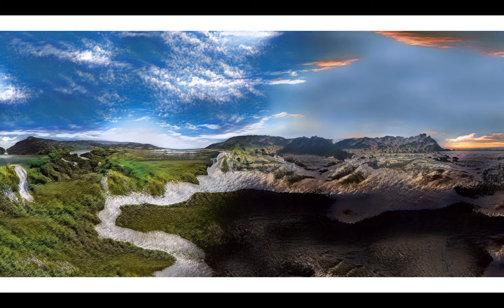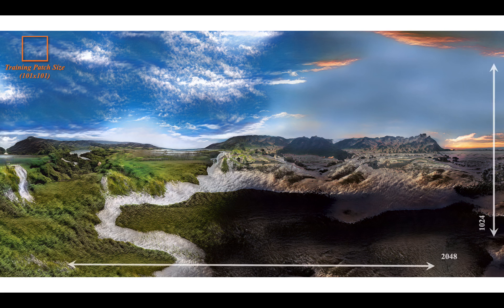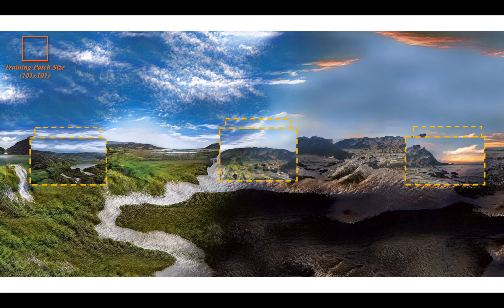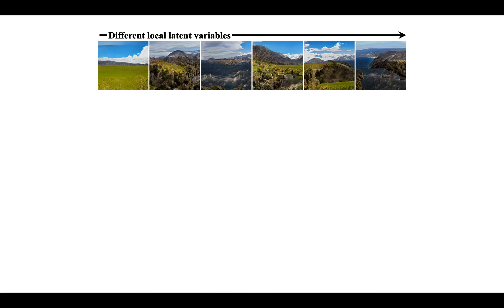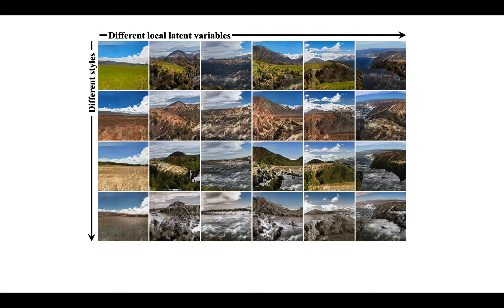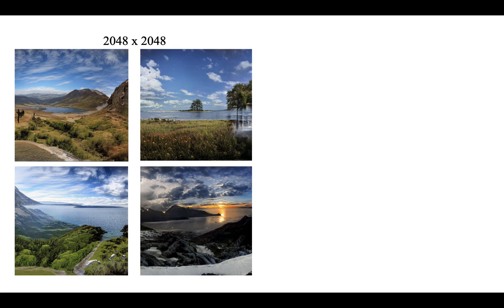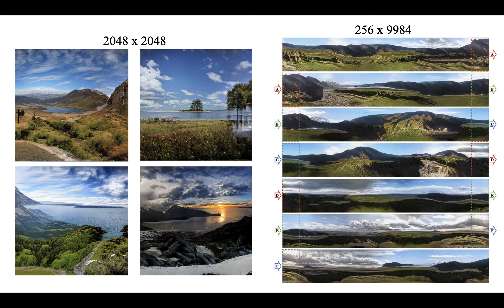Here's an example generated by InfinityGAN. The model is trained on 101×101 size images, and this sample is 1K×2K. You can see that all regions contain good structure and details. The structure synthesizer and texture synthesizer separately model image structure and texture with high diversity. We also demonstrate the diversity and disentanglement of the local latent variable and different styles. Here are more large-size images generated by InfinityGAN — 2K×2K samples, and a 256×10K image if you concatenate all the rows together.